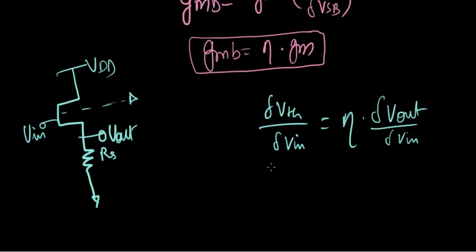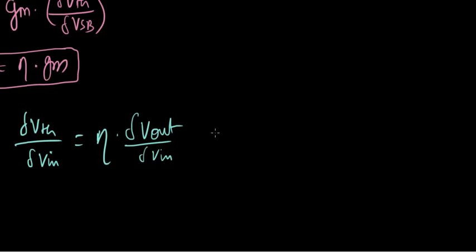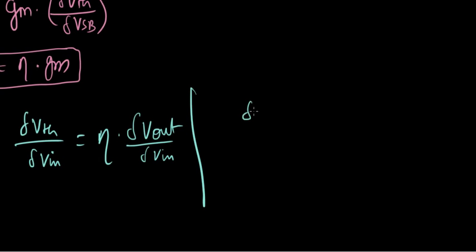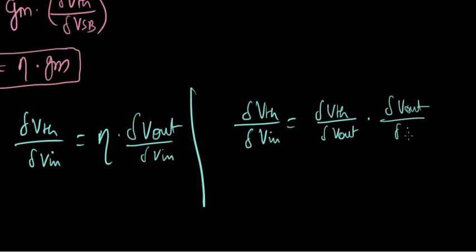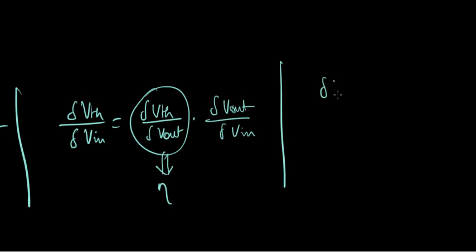First of all, if we take this, what we get... we're out of paper. So make it there. If we apply the chain rule, what we get is this: delta Vth over delta Vout times delta Vout over delta Vin, right? So I'm saying that this is now equal to eta. And how can you say that it is equal to eta? We just derived that delta Vth over delta Vsb equals eta for this structure.